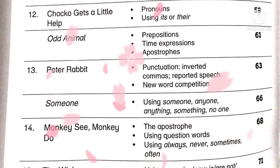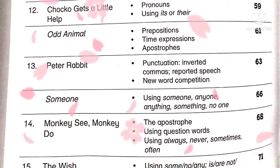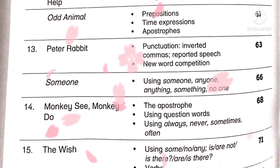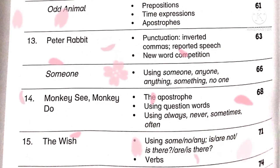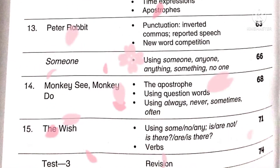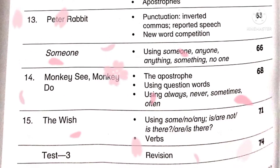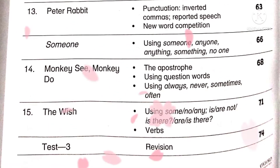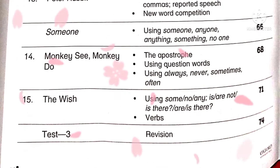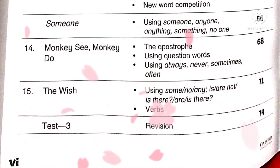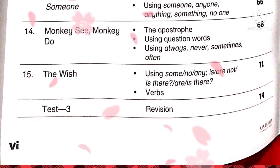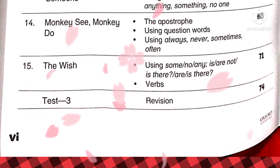The next unit is number thirteen, 'Peter Rabbit.' We are covering punctuation, inverted commas, reported speech, and new word composition. Next is 'Someone,' where we learn using 'someone,' 'anyone,' 'anything,' 'something,' and 'no one.' The next unit is number fourteen, 'Monkey See, Monkey Do.' This unit covers the apostrophe, using question words, and using 'always,' 'never,' 'sometimes,' and 'often.'